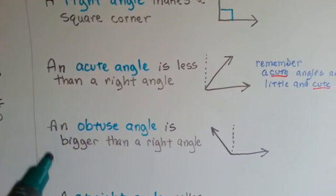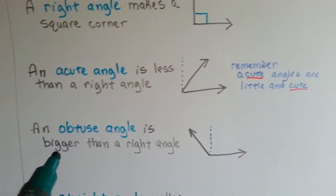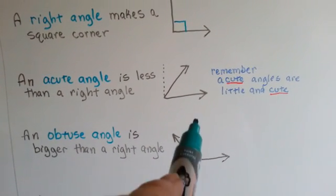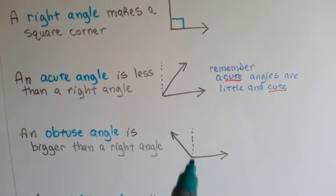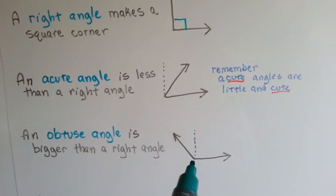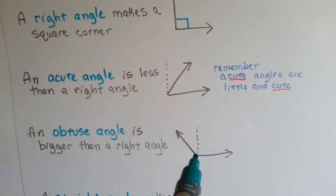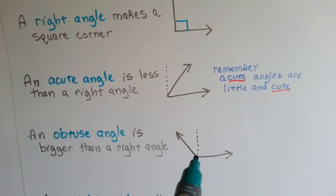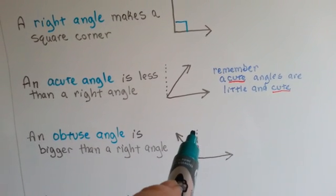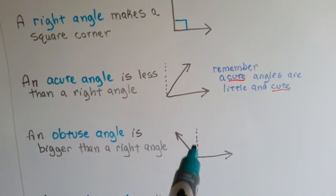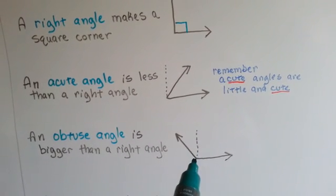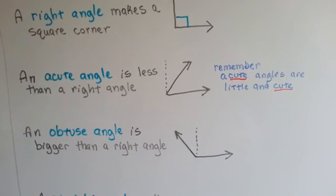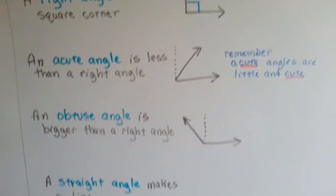An obtuse angle is bigger than a right angle. This dotted line is where the right angle would have been. The obtuse angle is anything past that dotted line — so even if it's just right on the edge, this side of the dotted line, it would be considered obtuse.